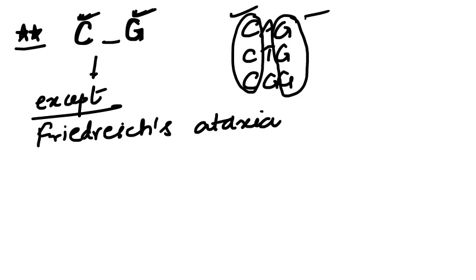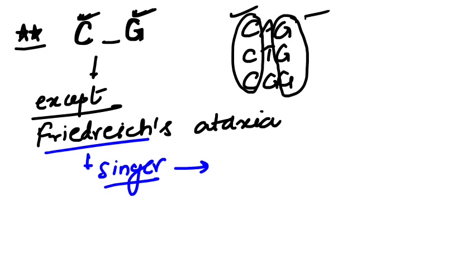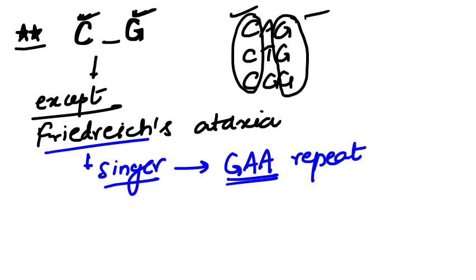There is only one exception to remember: Friedreich's ataxia. Except Friedreich's ataxia, all trinucleotide repeats start with C and end with G. To remember Friedreich's, think of Frederick as a singer — a singer sings, and in Hindi, singing is called 'ga-na.' So the trinucleotide repeat in Friedreich's ataxia is GAA, which does not start with C or end with G. Frederick is a singer, so GAA is the repeat.